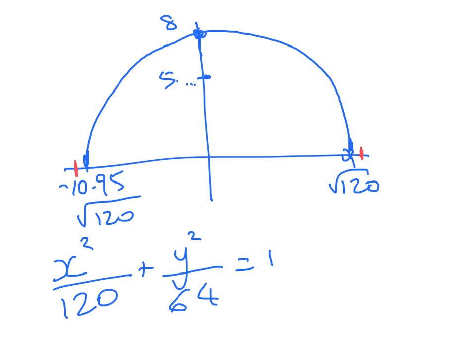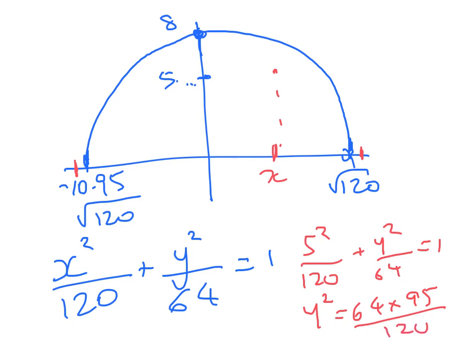So we need to check at x equals 5. Is my height still going to be okay? So we get 5 squared over 120 plus y squared over 64 is 1. That gives us y squared equals, so it would have to be 64 times 95 over 120. Now, when I solve that, I get the height here is 7.118 meters, so that's fine.